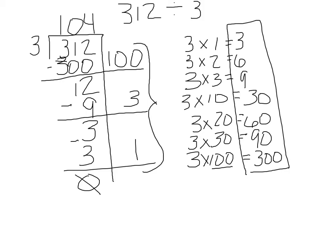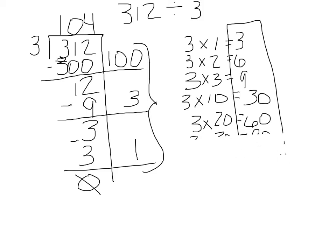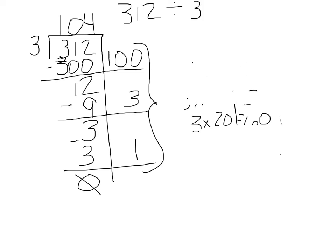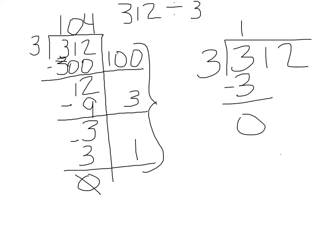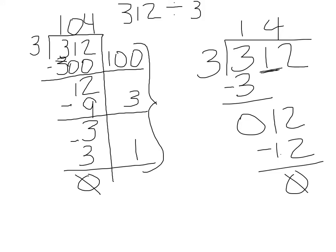Now I'll show what typically happens with students who are just following rote steps for the traditional algorithm without conceptual understanding — they make careless mistakes. In the traditional method, a student would say 3 times 1 is 3, subtract and get 0, bring down the 1, realize they can't make a group of 3 from 1, bring down the 2, and say 3 times 4 is 12. They subtract 12, see no remainder, and write the answer as 14. What they don't realize is they've missed a placeholder to show they couldn't make three groups, which is a common error with the traditional algorithm.